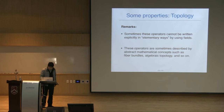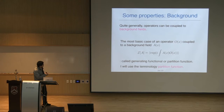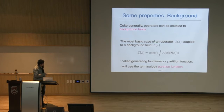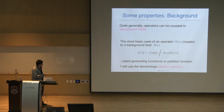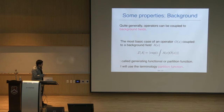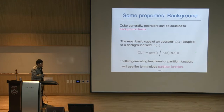If we have symmetries — or more generally, if we have operators — then we can couple these operators to background fields. The most basic case: if we have a local operator O, then we can couple it to a background field A. We multiply them, integrate over spacetime, exponentiate, and take the expectation value. I denote this by Z(A). This Z(A) is called the generating functional of correlation functions, or partition function, depending on the context — I will use the terminology 'partition function' in my lectures.